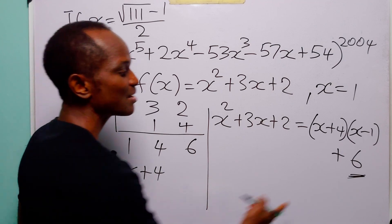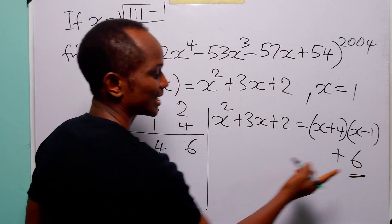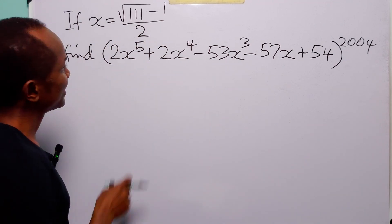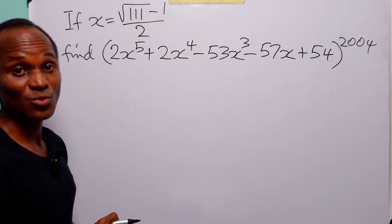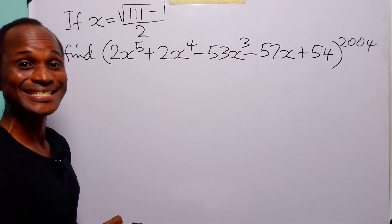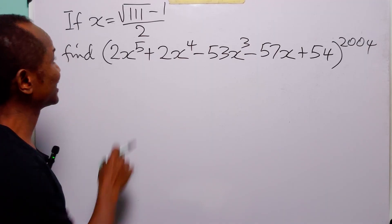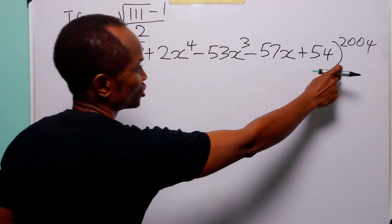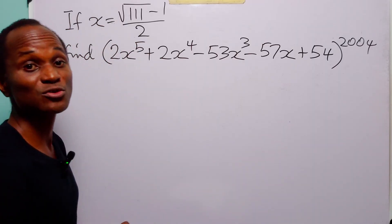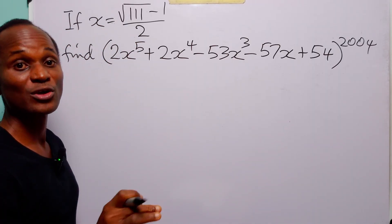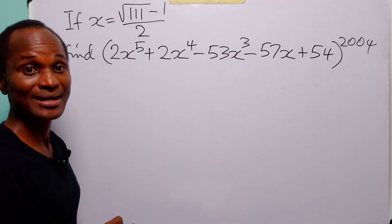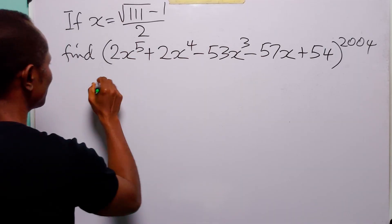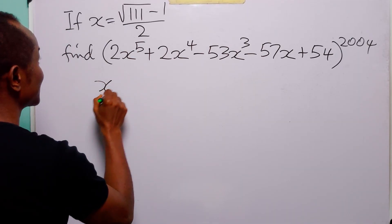We have that x² + 3x + 2 = (x + 4)(x − 1) + 6. You can see that 6 is the remainder, and this is the same value we calculated with the first method. Now coming to this question, you will see that if we dare to plug in this value of x into this function it is going to be a nightmare, so we are going to use the Remainder Theorem.